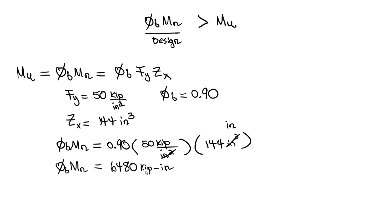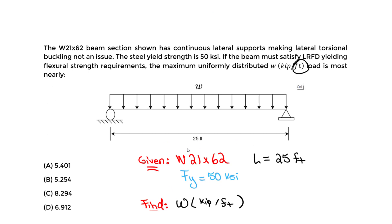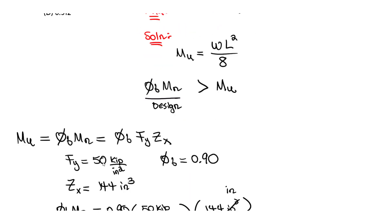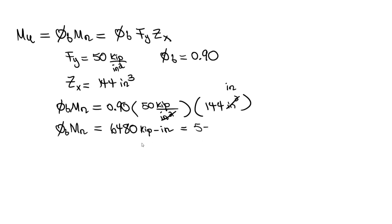We have 6480 kip·inch, but we need to convert to kip·foot since the final answer uses feet. There are 12 inches in one foot, so we divide by 12: 6480 ÷ 12 = 540 kip·foot.